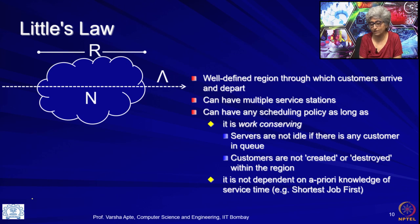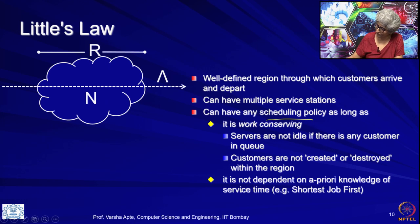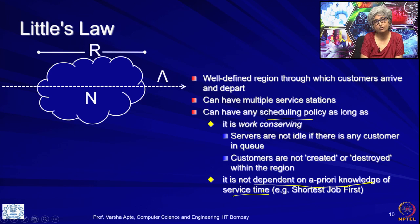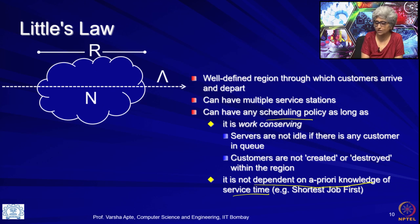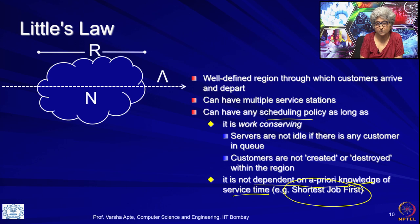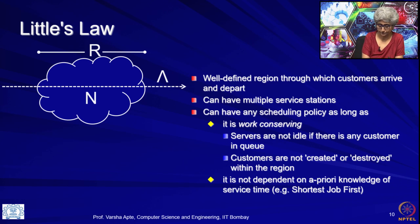As long as these conditions are satisfied, the last condition is that the scheduling policy must not be dependent on a priori knowledge of service time. Any kind of scheduling policy is allowed as long as it does not pick customers based on known service time. The most famous disallowed policy is Shortest Job First, where the server picks the customer with the shortest service time in the queue. Once these conditions are satisfied, the law holds.